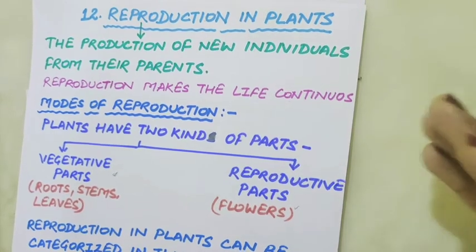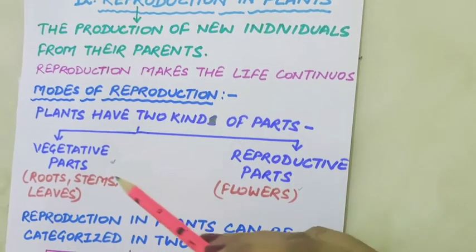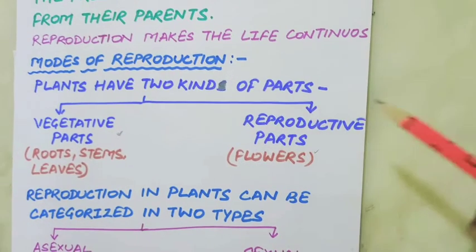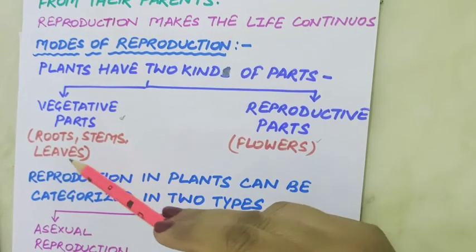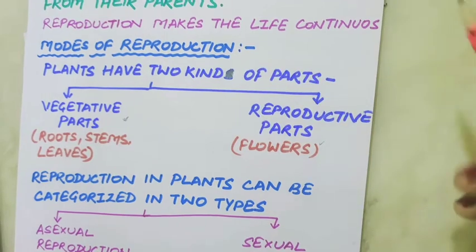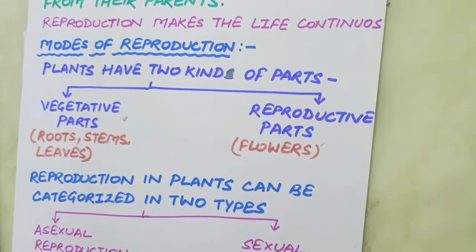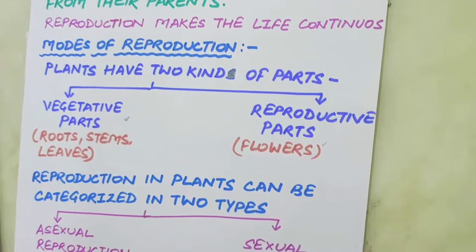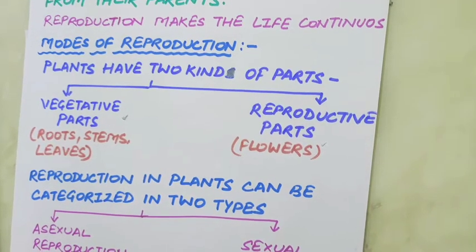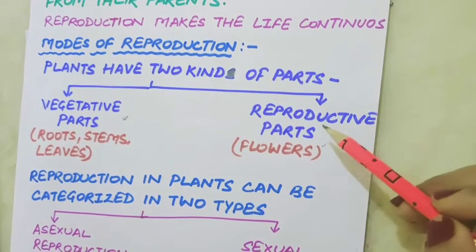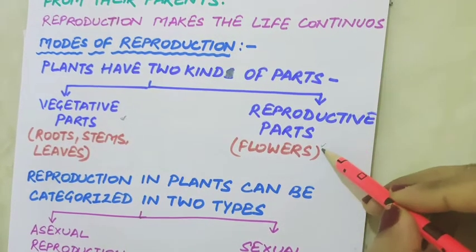We can categorize the parts of a plant into two: vegetative parts and reproductive parts. Various parts of the plant such as roots, stem, and leaves — each with a specific function — are called vegetative parts. The parts of the plant that participate in the process of sexual reproduction are called reproductive parts, like flowers.